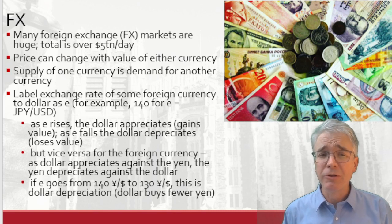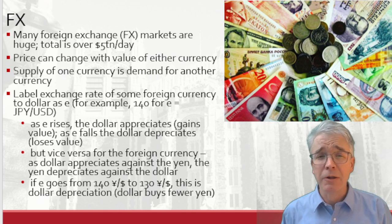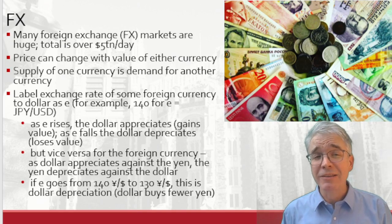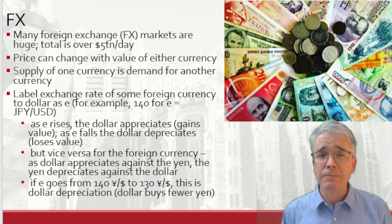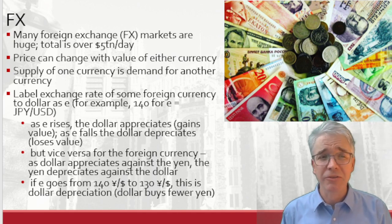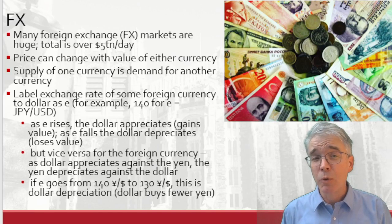When we use the exchange rate in a formula, it's always units of foreign exchange per dollar. So if we're talking about yen, e equals 140 means 140 yen per dollar. One reason to keep the dollar in the denominator is we can clearly say: as e rises, that's the dollar appreciating — gaining value. If e falls, that's the dollar depreciating — losing value. It's vice versa for the foreign currency: as the dollar appreciates against the yen, the yen depreciates against the dollar.